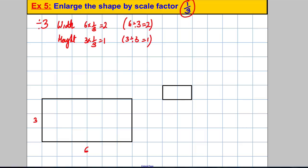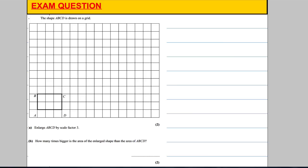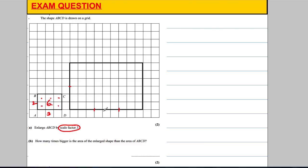Pause the video and have a go at the practice questions. For the first one: the shape is 3 across and 2 up, and the scale factor is 3, so the new shape is 9 across and 6 up. Drawing the rectangle — 9 across (3, 6, 9) and 6 up (3, 6) — gives the enlarged shape. The original area is 6 square units and the new area is 54 square units; 54 ÷ 6 = 9, so the area is 9 times bigger — which is 3 squared.